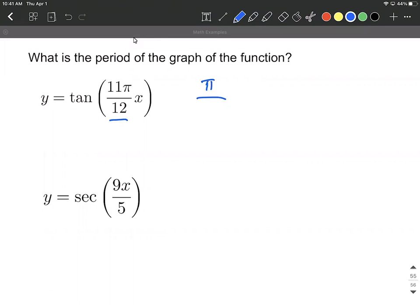All right, so we start with π and we divide by 11π over 12, which is equivalent to saying π the numerator multiplied by the reciprocal 12 over 11π.